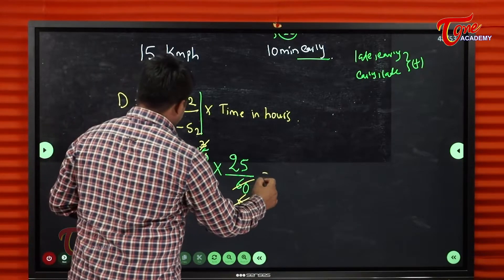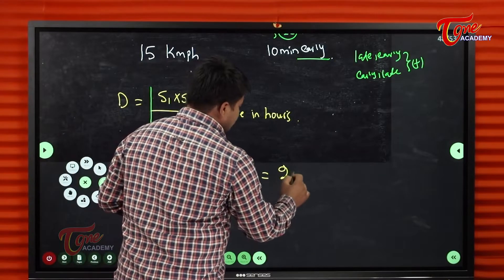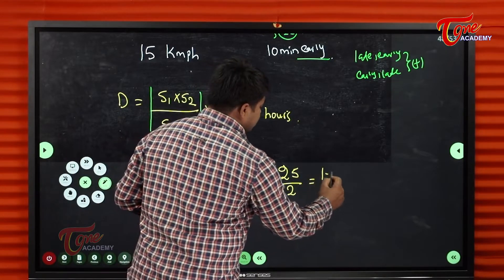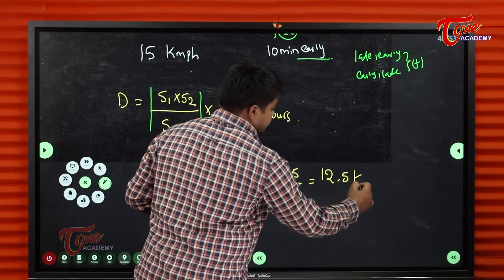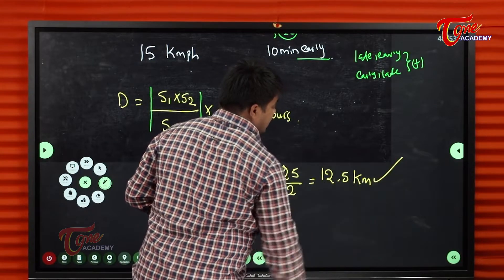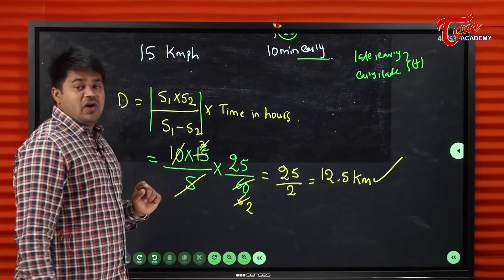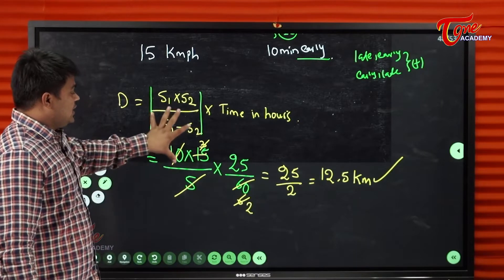After calculation, 25 divided by 2 gives 12.5 kilometers. So the distance is 12.5 kilometers.